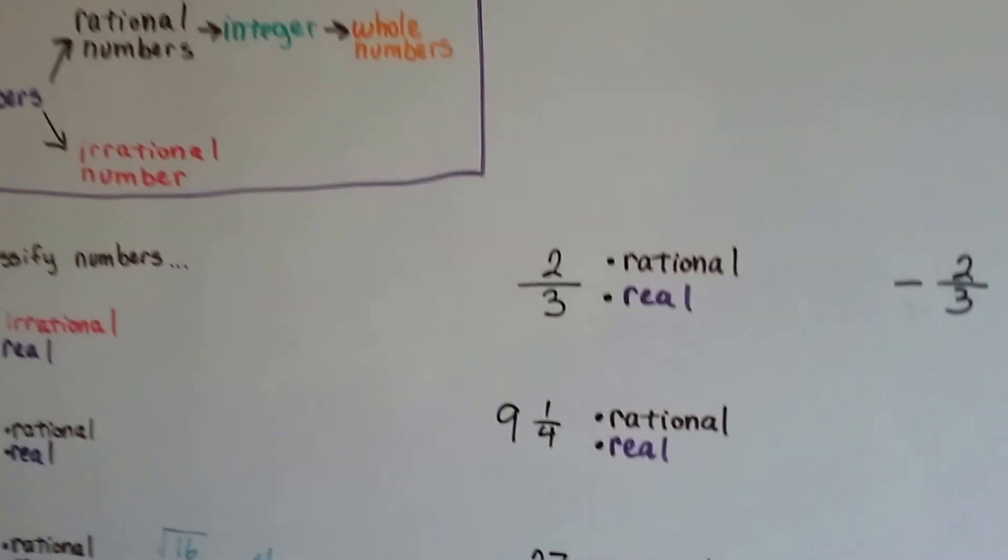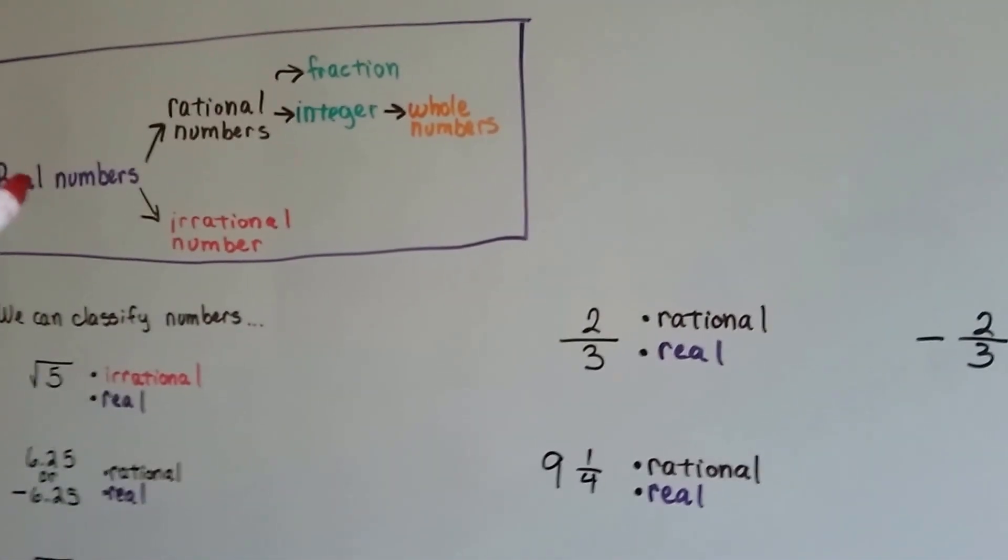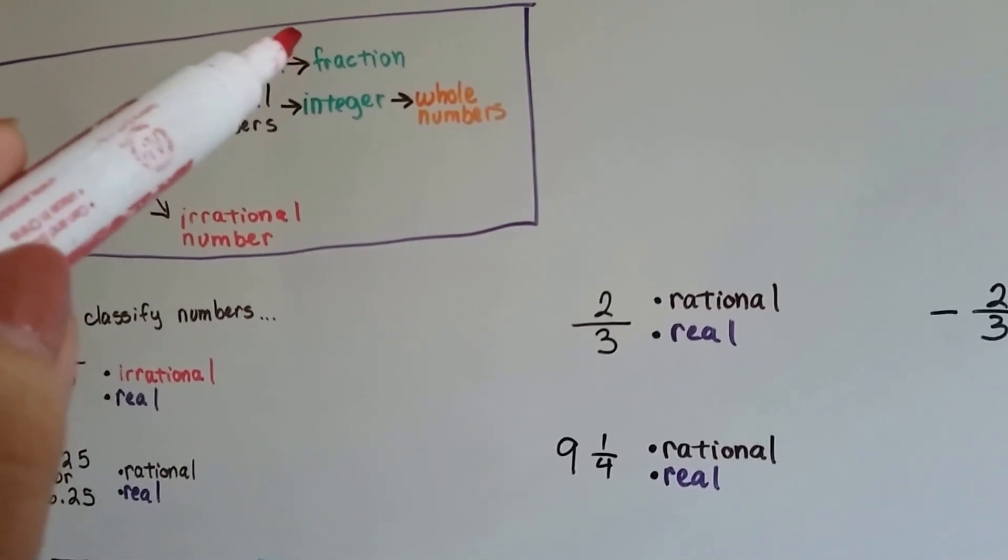2 thirds. That would be a real number and a rational number. And it's a fraction.